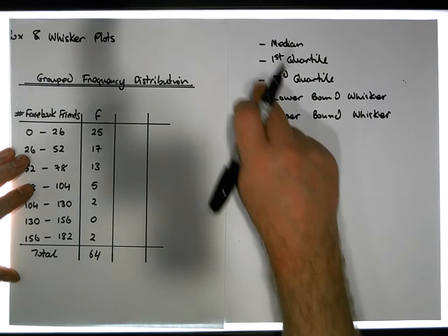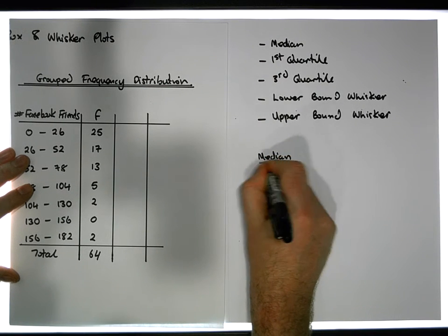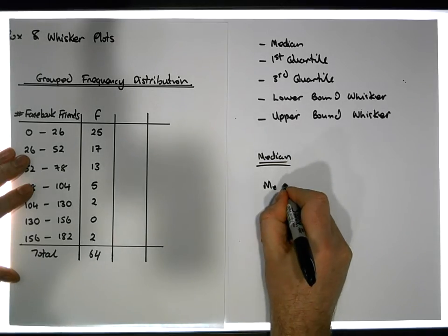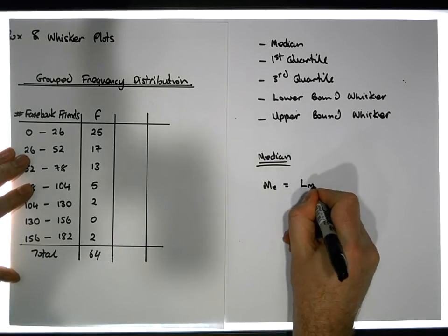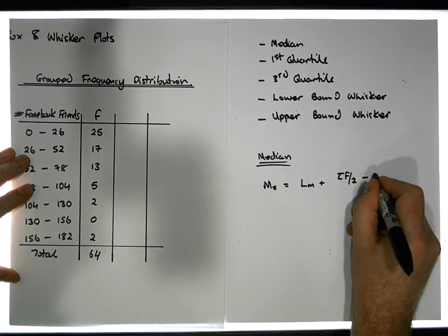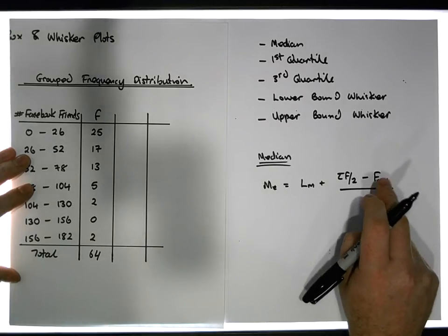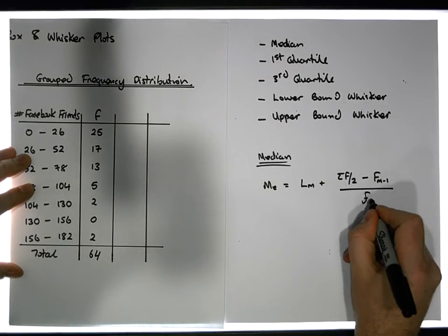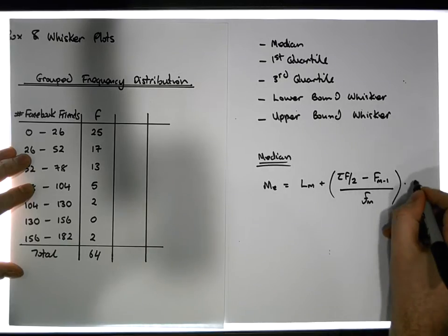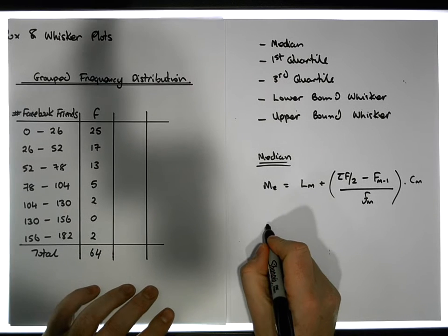The median formula is: M_e equals the lower bound of the median class, plus [(σf/2 minus capital F of the class before the median class) divided by small f_m (the frequency of the median class)], times the class width. The key value here is σf/2.